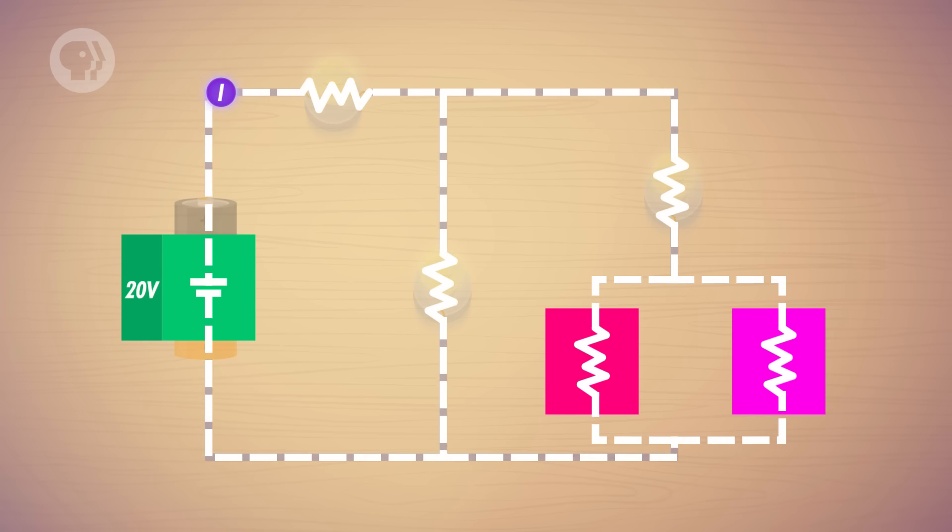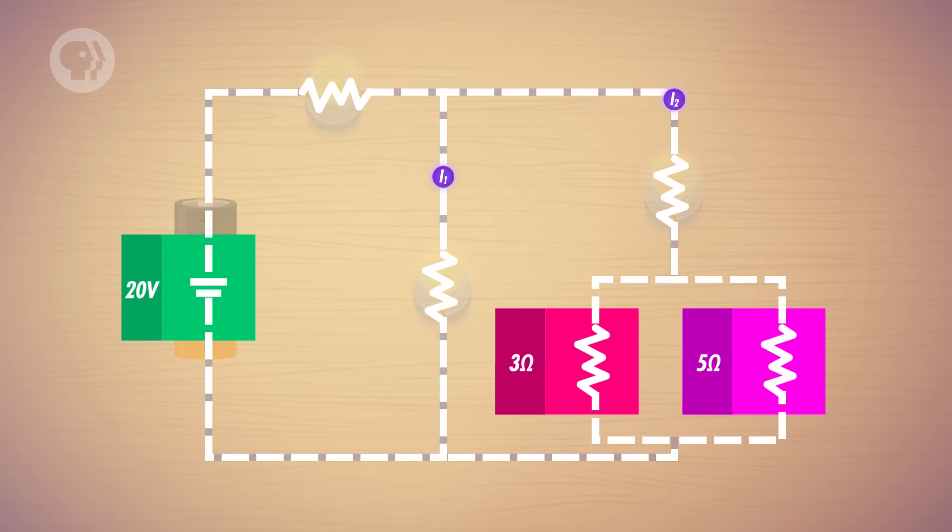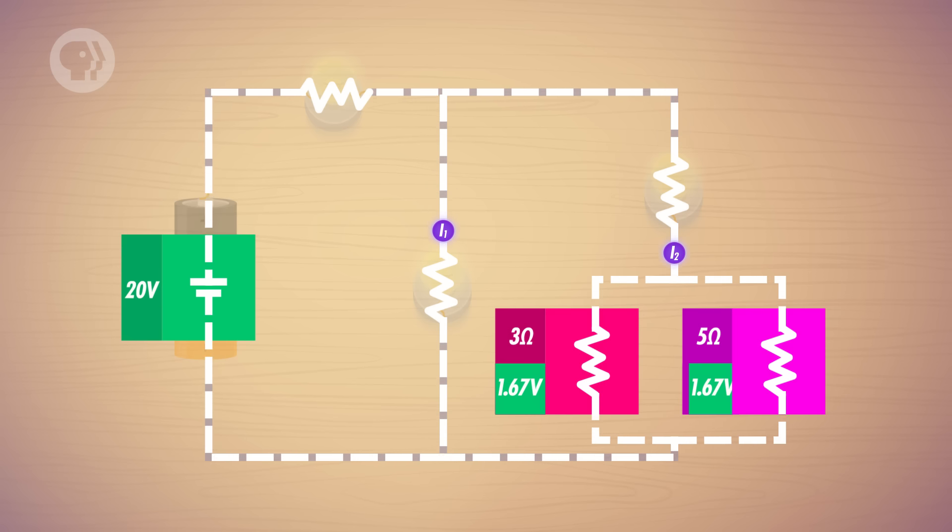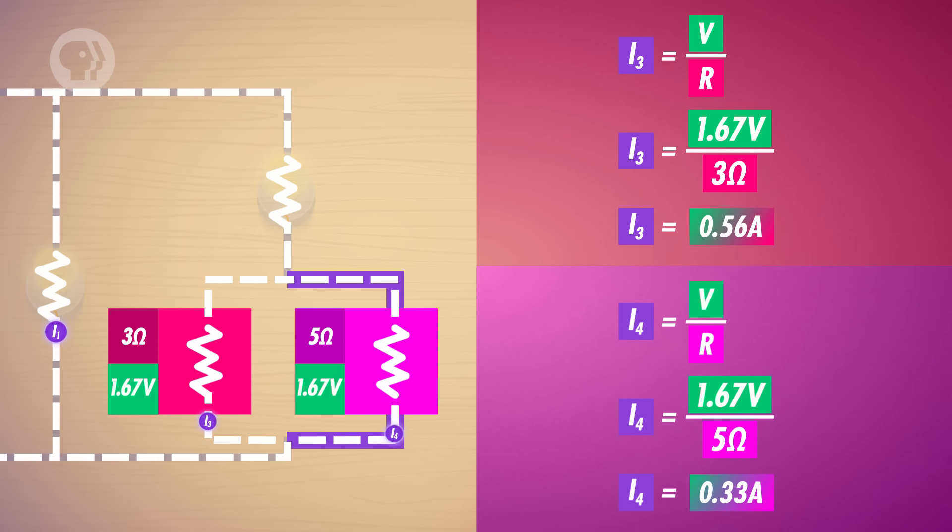Okay, back to work. Our 1.88 ohm resistor is a combination of a 3 ohm and a 5 ohm pair of resistors in parallel. So the voltage drop across each resistor is still 1.67 volts, but the current passing through each will be different. Using Ohm's law, you can divide the voltage across each resistor by its respective resistance, giving you the current through each branch. 1.67 volts divided by 3 ohms gives you a current of 0.56 amperes through the 3 ohm resistor. And 1.67 volts divided by 5 ohms gives you a current of 0.33 amperes. And since 0.56 plus 0.33 amperes equals the 0.89 amperes that enters the wire at the split, you know you're on the right track.